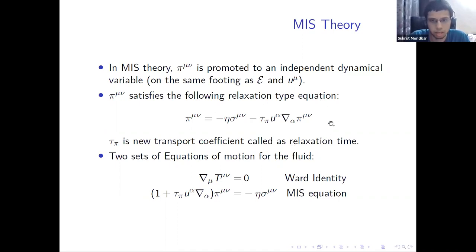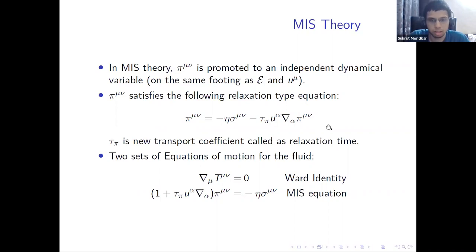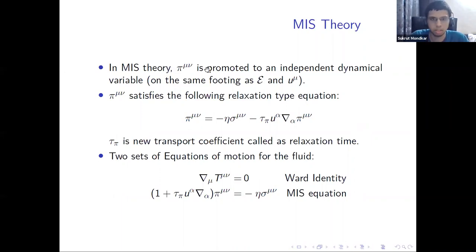This gives another independent equation apart from the usual conservation equations. If we substitute the first-order Navier-Stokes constitutive relation on the right-hand side, we get a second-order constitutive relation, and we can repeat this order by order. In this sense, MIS is a resummation of hydrodynamics to all orders, which means it contains more degrees of freedom than just the Navier-Stokes equation, coming from pi^{mu nu}.